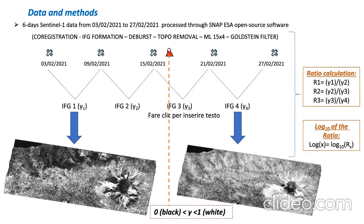What I did was basically choosing six-day interferograms with five acquisitions, doing four interferograms. The processing includes co-registration, interferogram formation, diverse topography removal, multi-look, and Goldstein filter — the same steps used for interferometry except the unwrapping phase.